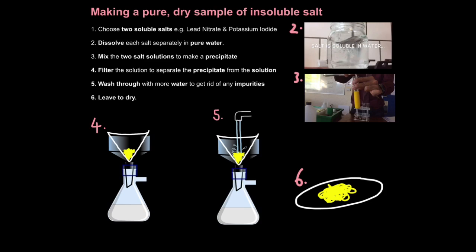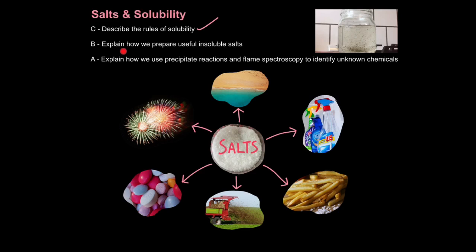And then finally you just leave the precipitate to dry on your filter paper. So here it is drying. So remember just get two soluble salt solutions, react them together to make a precipitate, filter it then wash through with more water and leave to dry. If you even say it like that you'll get most of the marks. And that is how we explain how we prepare useful insoluble salts.